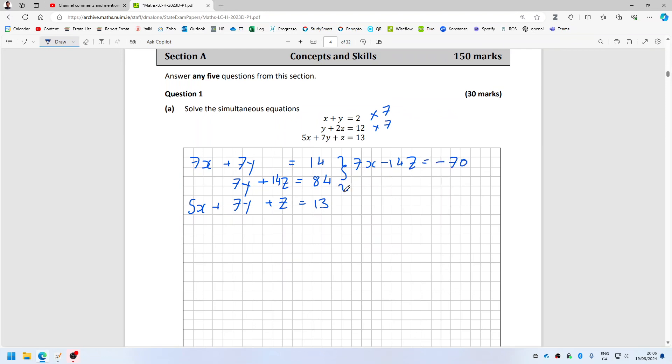Then I minus these two. Now, -5x is -5x, 7y minus 7y is gone, and 14z minus z is 13z, and then 84 minus 13 is 71.